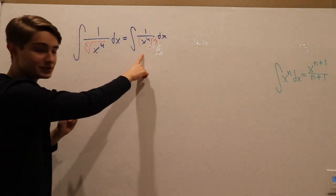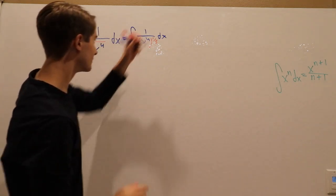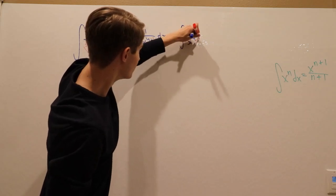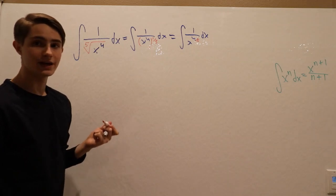From here we see that we have a power to a power, which means that we can multiply the powers together. So that gives us the integral of one over x to the four-fifths dx.